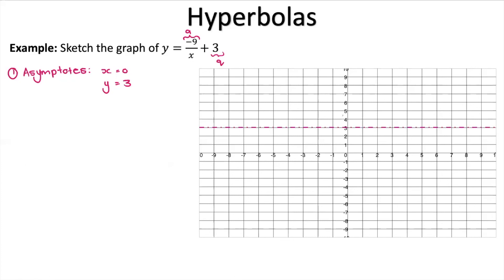The second step is to look at the shape of the graph using the a value, which here is negative 9. Since negative 9 is less than zero, the graph falls into the top left and bottom right quadrants (2 and 4). Keep that in mind so you draw the graph in the correct place.